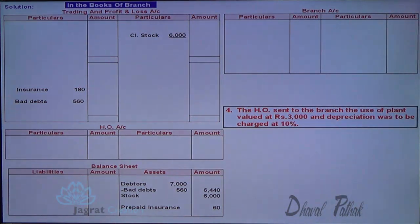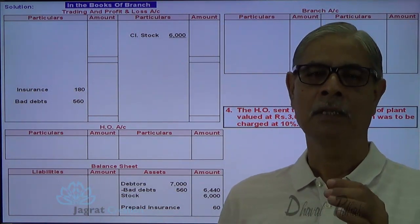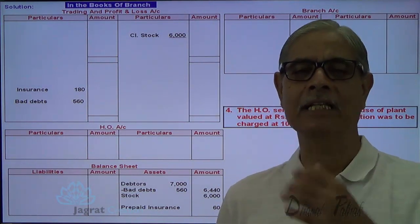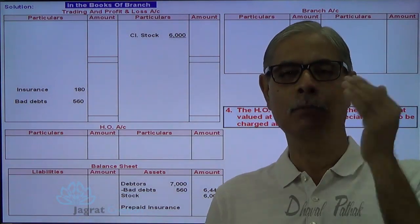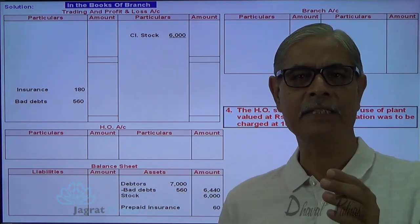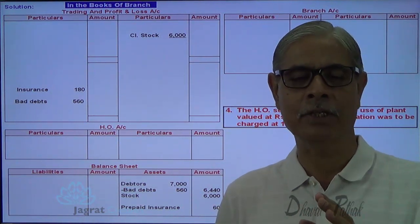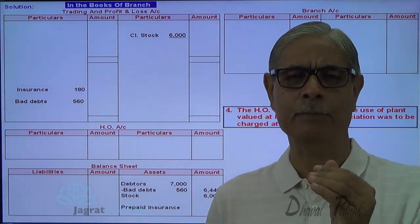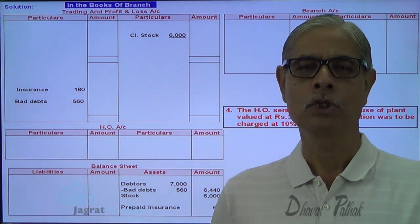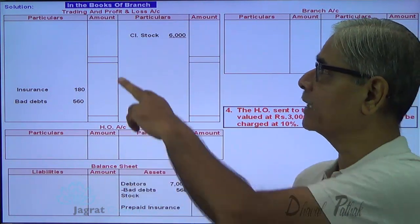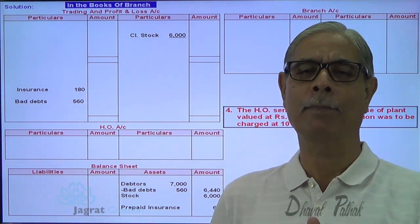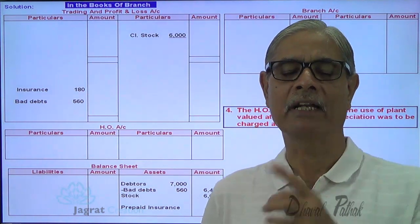The fourth adjustment: HO has sent the branch a plant valued at 3,000, with depreciation at 10%. The plant account balance is held in the books of HO, not transferred to the branch. So depreciation on the plant is provided by HO and charged to the branch. The depreciation works out to 300. The adjustment entry is: Dharvard Branch Account debit, to Plant Account credit — in the books of HO.